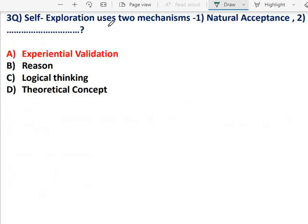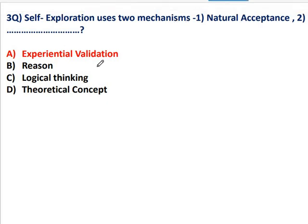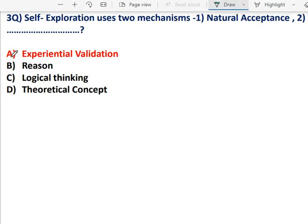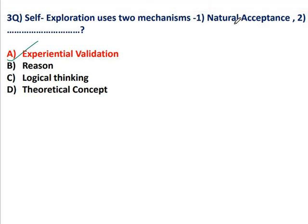Question 3: Self exploration uses two mechanisms — one is natural acceptance, and what is the other one? The other one is experimental validation. Natural acceptance is what you naturally accept and it remains in you unchanged. The second is where you logically and experimentally validate something and then accept it — that is experimental validation. So the two mechanisms of self exploration are natural acceptance and experimental validation.